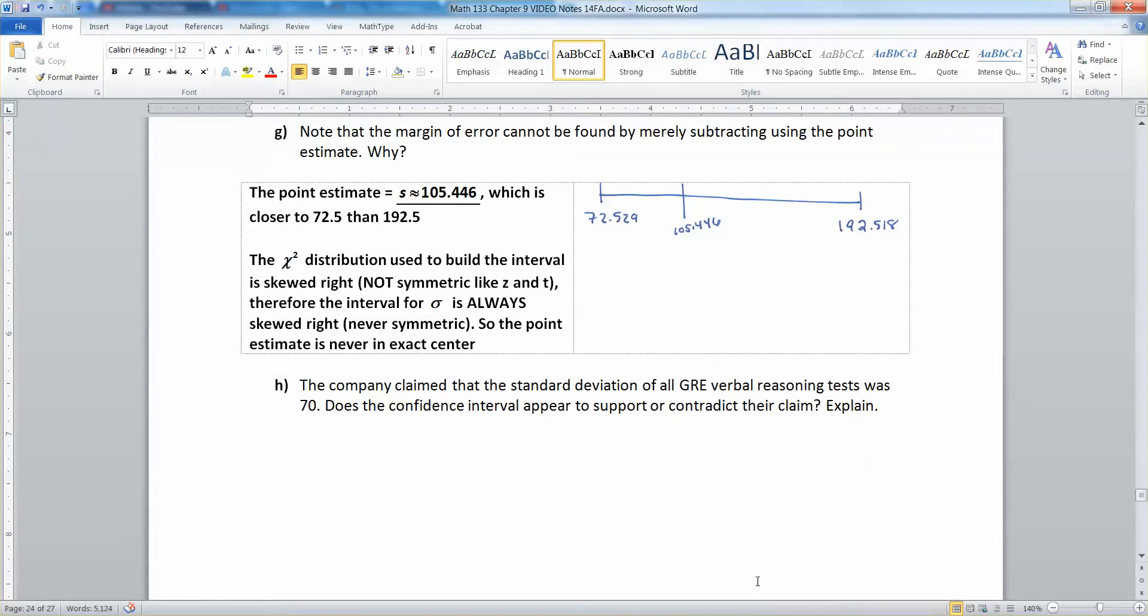All right. So the company claims that the standard deviation of all GRE verbal reasoning tests was 70. Does the confidence interval appear to support or contradict their claim? So let's just pretend they claim it's 70. Their claim is that sigma equals 70. The interval, however, doesn't really support that. It contradicts that.